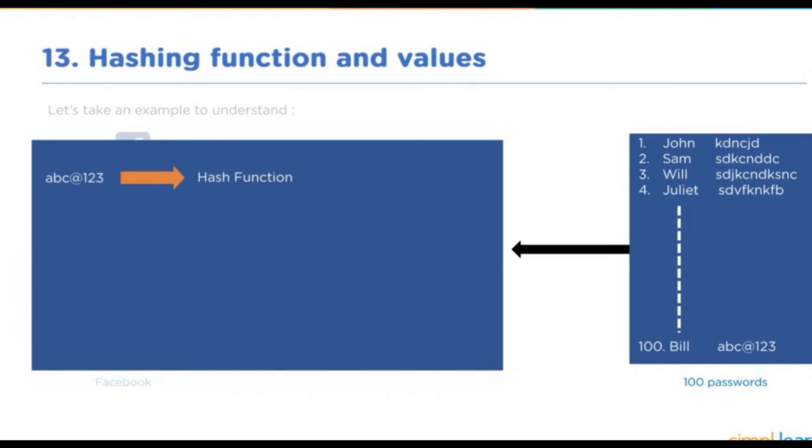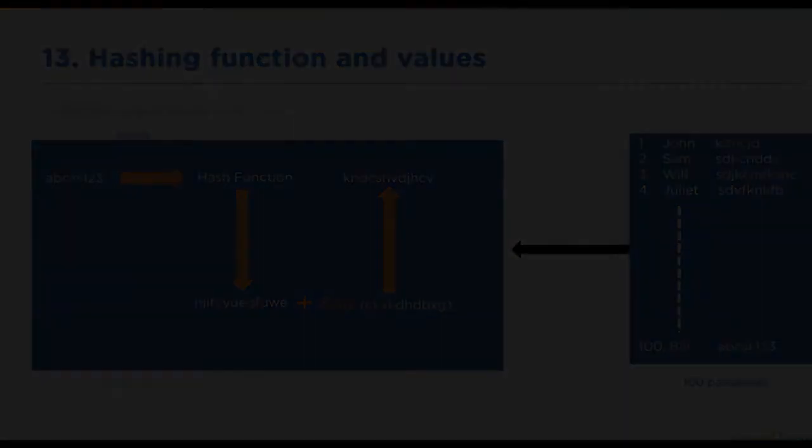Let's take an example to understand this. Instead of storing the password ABC at 123 as plain text, a salt value is appended to the plain text password, and then the result is hashed. This is referred to as the hashed value. The salt is randomly generated, which is unique for each password. Both the salt value and the hashed value are stored together.